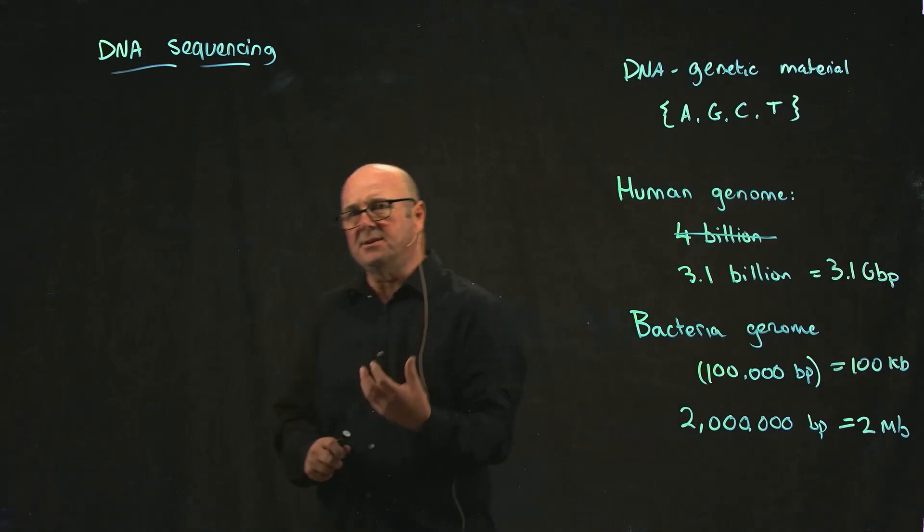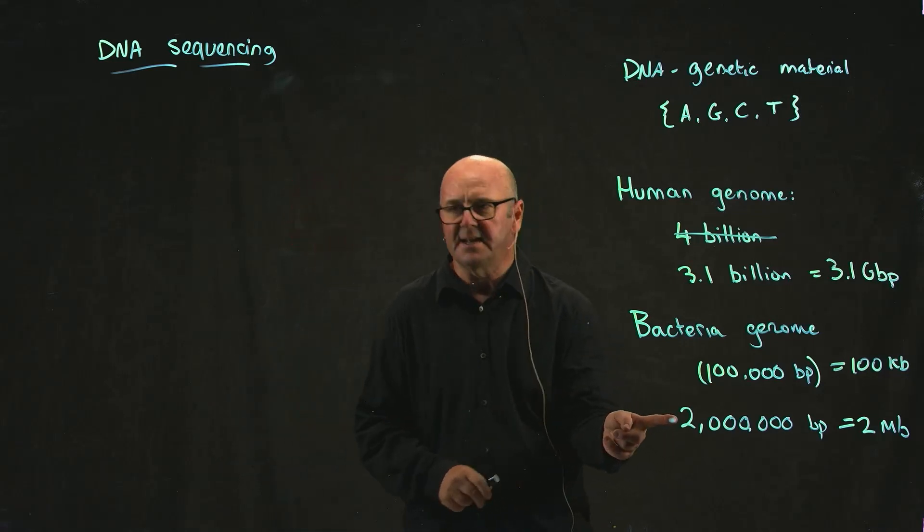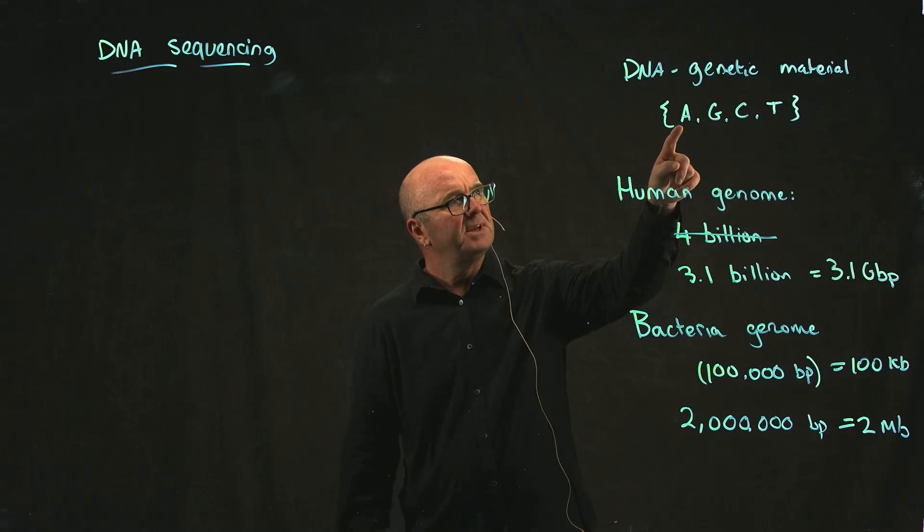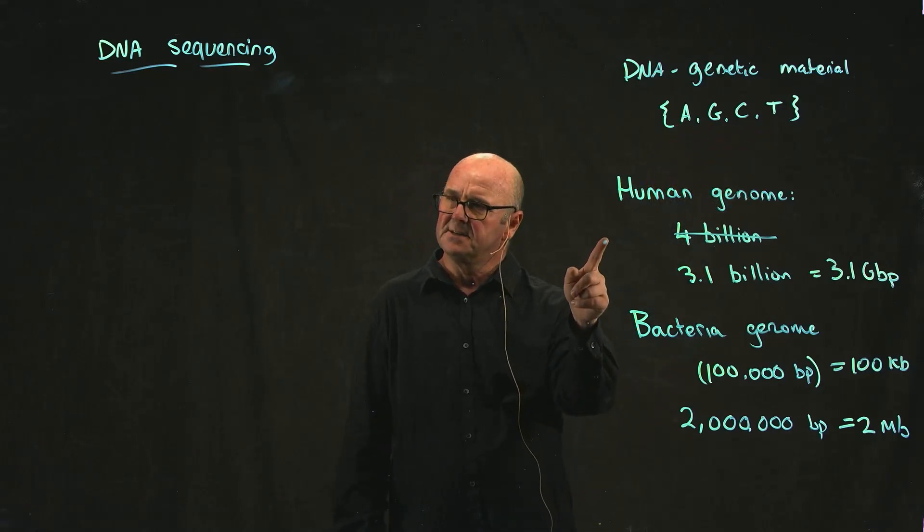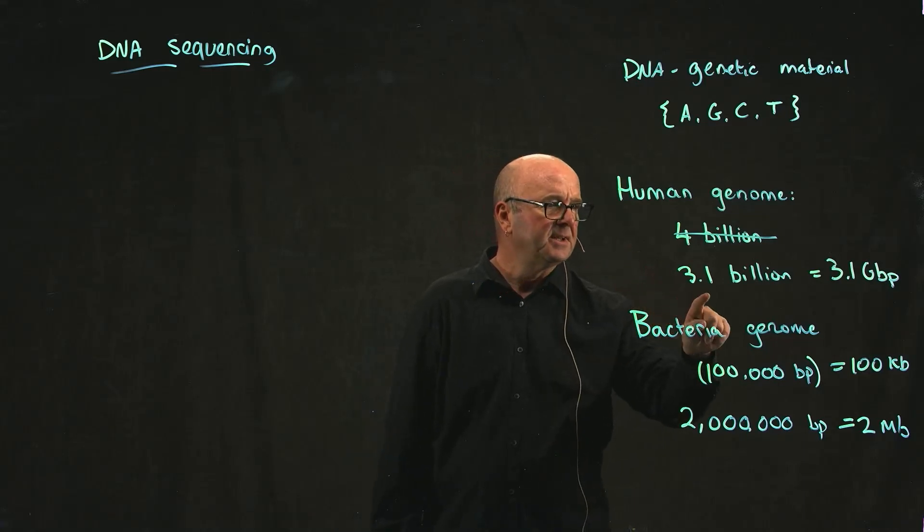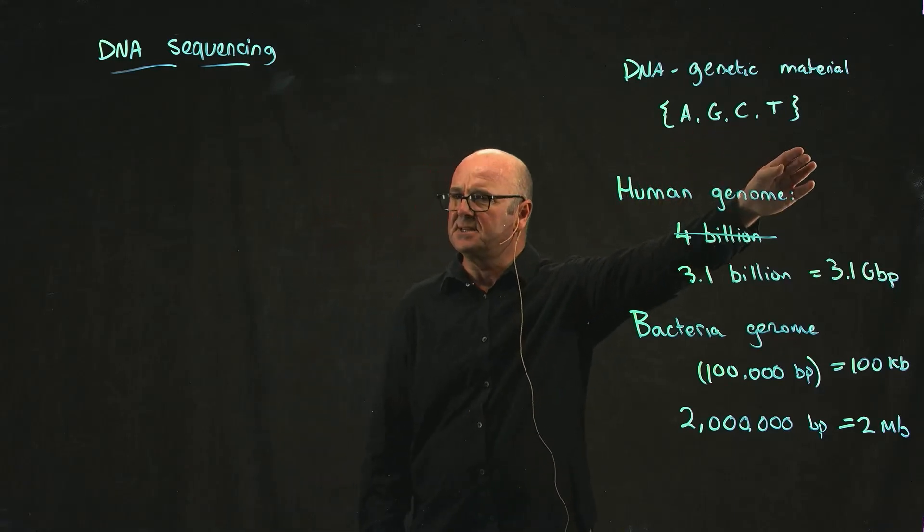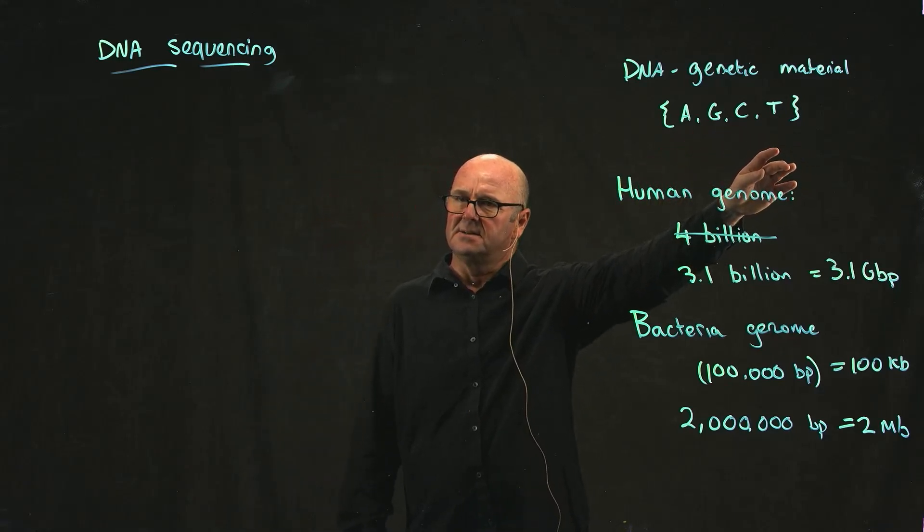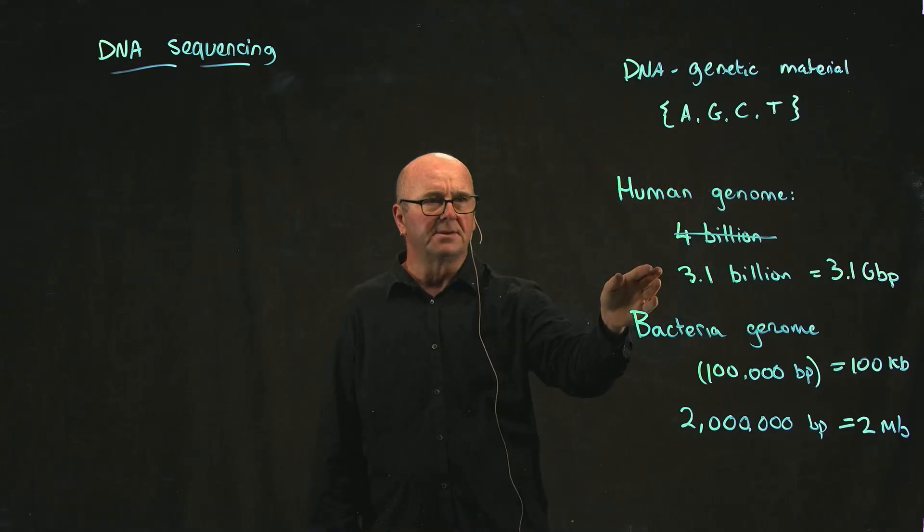So when we talk about sequencing the genome, what we're talking about really is understanding the order of the A, G, C, and T in each of these things. So the human genome has 3 times 10 to the 9 letters, but it's only combinations of A, G, C, and T. There's only those four bases, those four letters that make up the human genome.